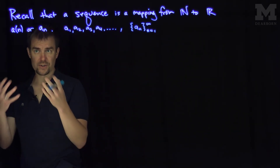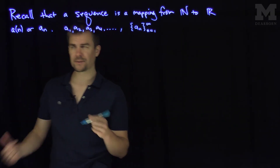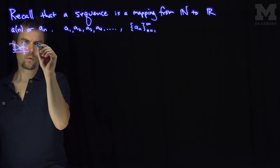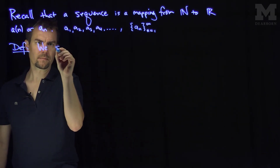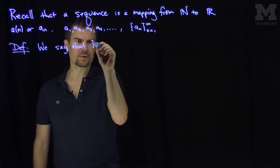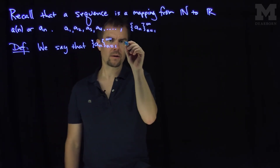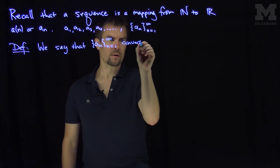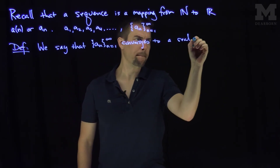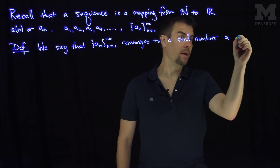Now here comes the definition. What does it mean for a sequence to converge? We have a good intuition for what this should mean, but let's formalize it. Here's our definition. We say that the sequence a_n, n goes from 1 to infinity, converges to a real number a,